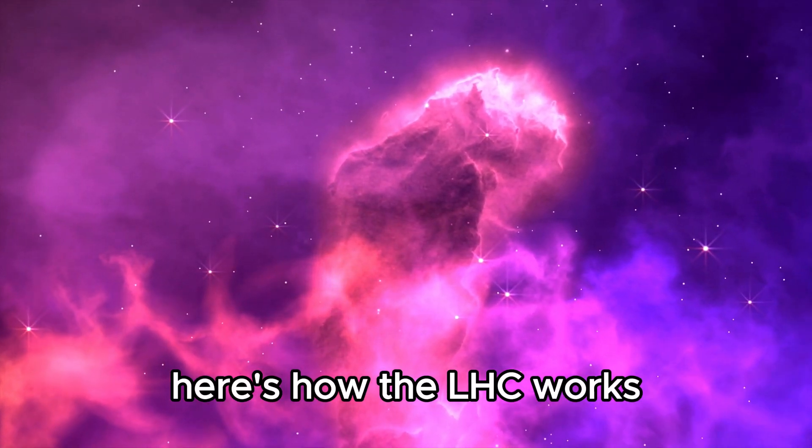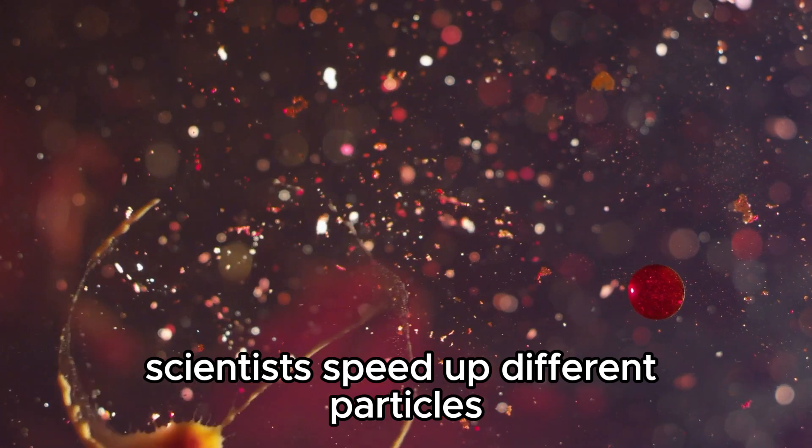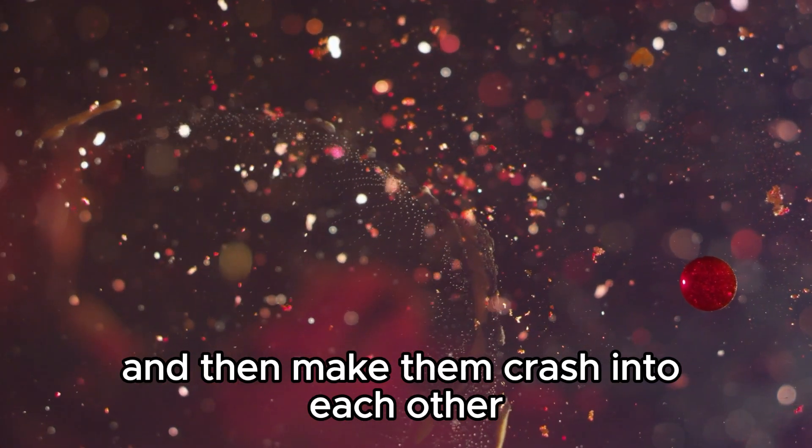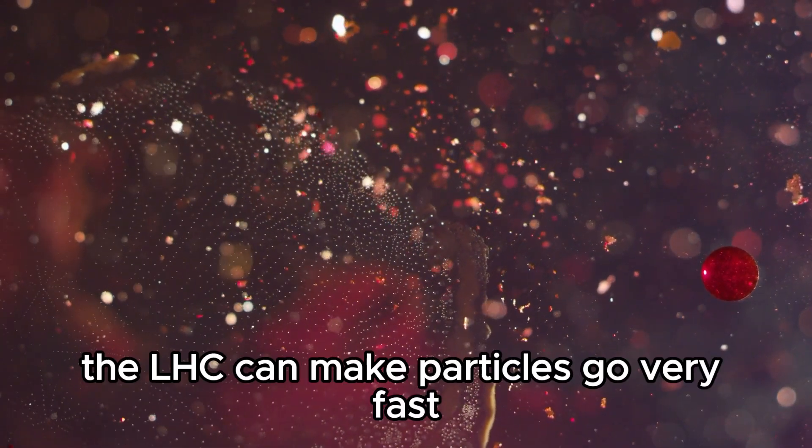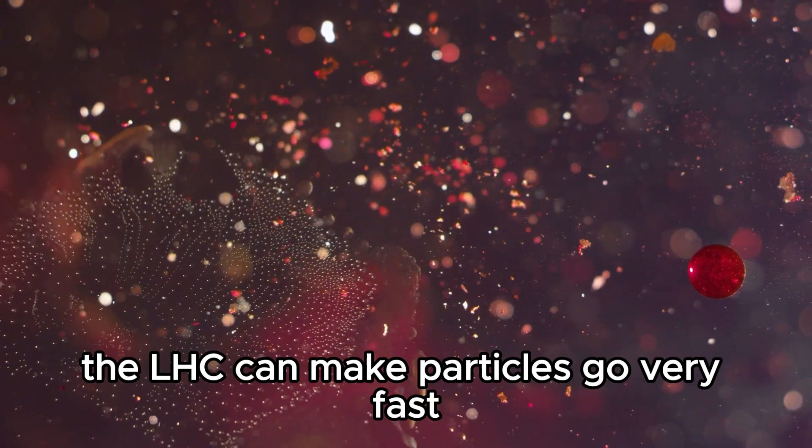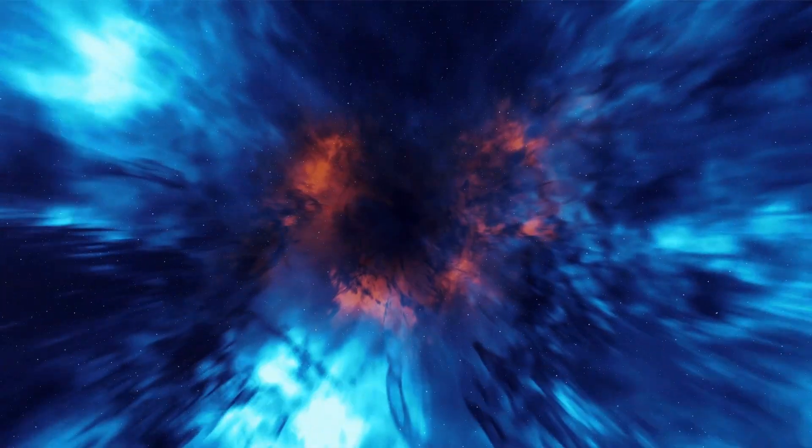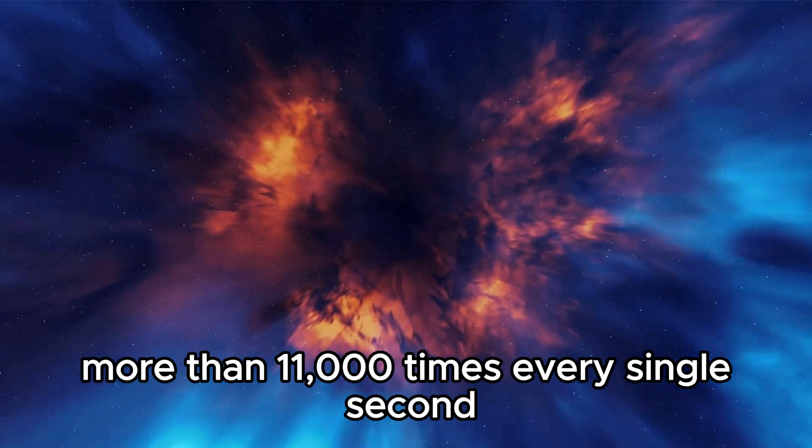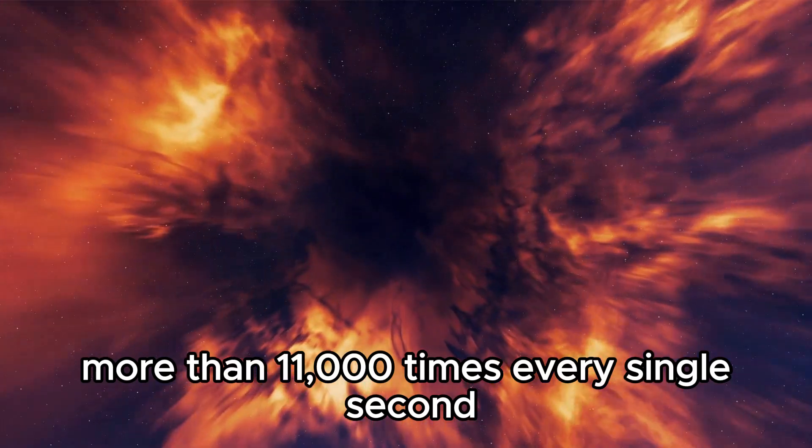Here's how the LHC works. Scientists speed up different particles and then make them crash into each other with a lot of force. The LHC can make particles go very fast, almost as fast as light, and they go around the circular tunnel more than 11,000 times every single second.